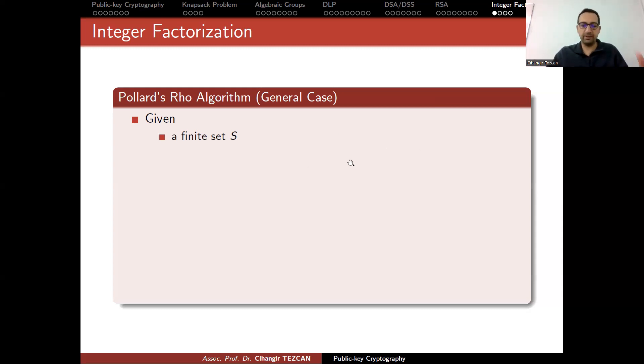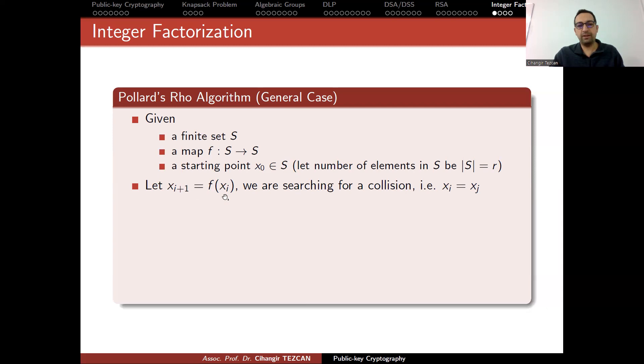Pollard's Rho algorithm is a general algorithm which you can use in many different scenarios. Let me first introduce you to the general case. Given a finite set S and a map f from S to S, you choose a starting point x0 in S. Assume that this set has r elements.